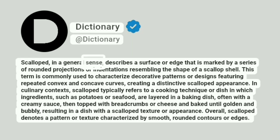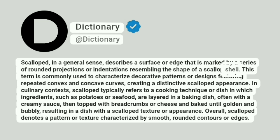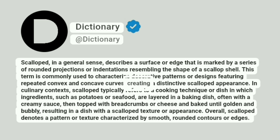Scalloped, in a general sense, describes a surface or edge that is marked by a series of rounded projections or indentations resembling the shape of a scallop shell. This term is commonly used to characterize decorative patterns or designs featuring repeated convex and concave curves, creating a distinctive scalloped appearance.